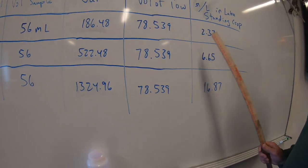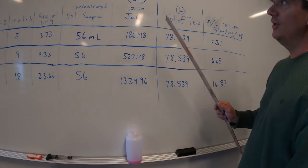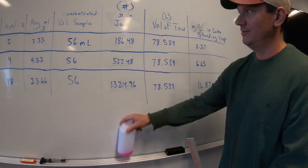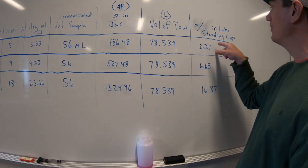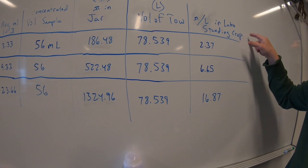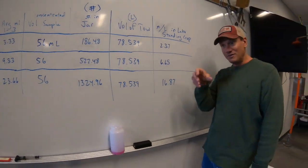And then what we really want is what's available standing crop out there for fish food. So we take the number in the jar, divide it by the volume of the tow, and we have the number per liter standing crop out in the lake. That is, if you were to take a sample jar, a one liter sample jar, and dip it in and come up...